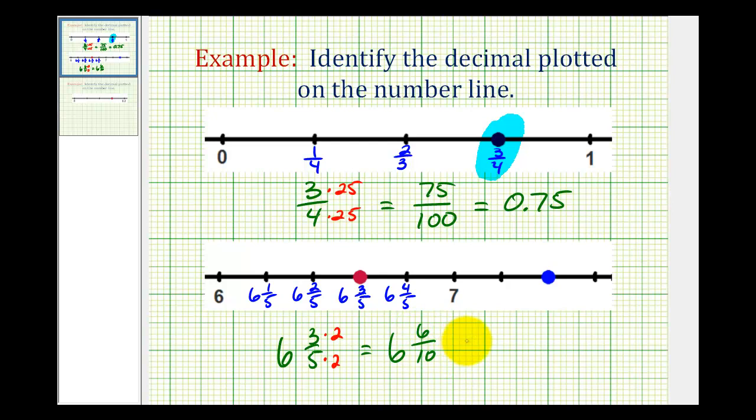Well if we know our place values, six and six-tenths would be six-point-six. So the value plotted on the number line, six and three-fifths, written as a decimal is six-point-six.